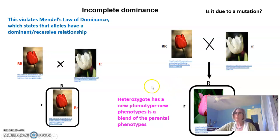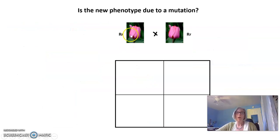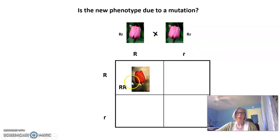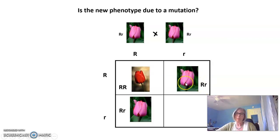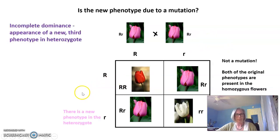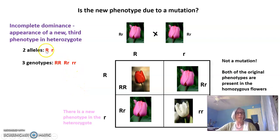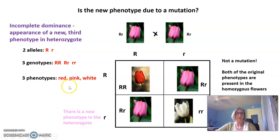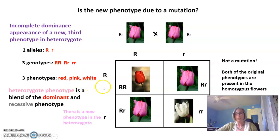You might ask — what if that's just a mutation? We could check by doing a test cross: crossing each of these heterozygous individuals. Each heterozygote gives one dominant allele and one recessive allele to their gametes. What would we produce? A homozygous dominant — and sure enough, the red dominant phenotype reappears. The heterozygotes again show the pink blended phenotype, and the homozygous recessive gives back the white phenotype. So it's not a mutation. For incomplete dominance, there's a new third phenotype in the heterozygote — we still have two alleles and three genotypes, but now three phenotypes, with the third being a blend of dominant and recessive.